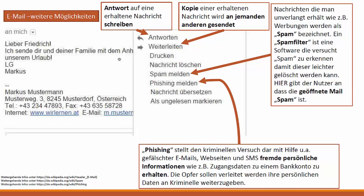Es gibt weitere Möglichkeiten bei E-Mails: Man kann auf eine erhaltene Mail antworten oder sie weiterleiten, also eine Kopie weitersenden. Dann gibt es die Möglichkeit, Spam zu melden. Spam sind Nachrichten, die man unverlangt erhält und die häufig mit Werbung verbunden sind. Ein Spam-Filter ist eine Software, die versucht, Spam zu erkennen, damit dieser leichter gelöscht werden kann. Der Nutzer kann über diesen Menüpunkt angeben, dass eine geöffnete Nachricht Spam ist.